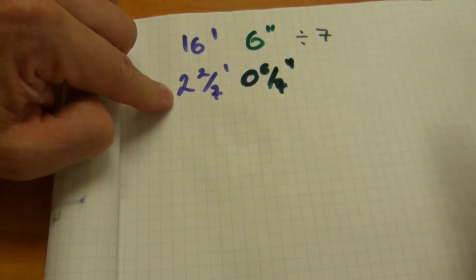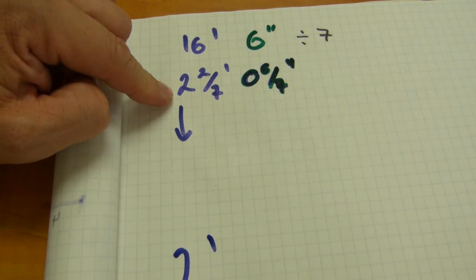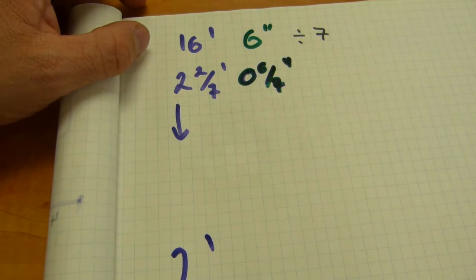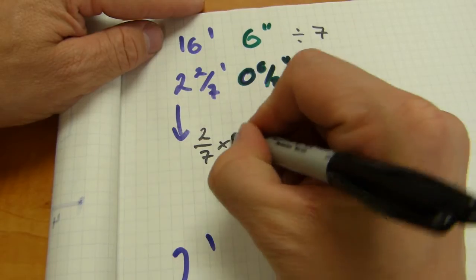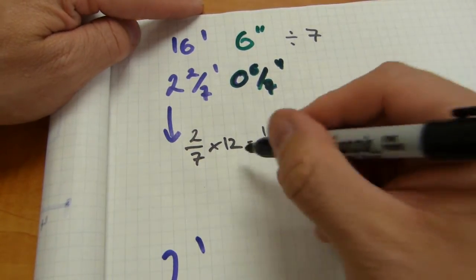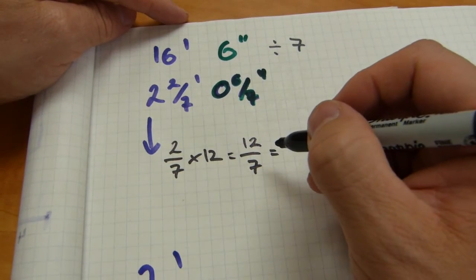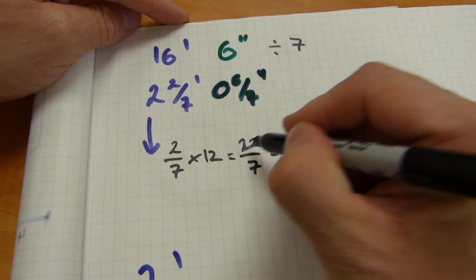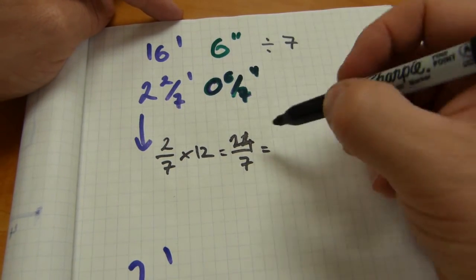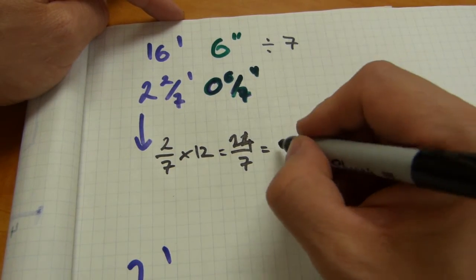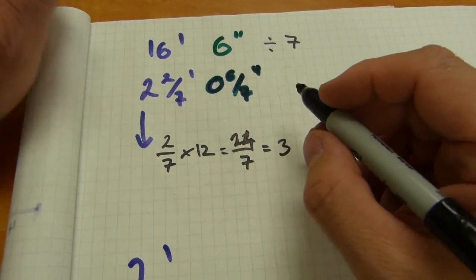That 2, this 2, the whole number part, carries down into the final answer, 2 feet. But we need to do something with the 2 sevenths of a foot. 2 sevenths needs to be multiplied by 12. That's, again, whole number by a fraction. The numerator gets multiplied, so that's 24 sevenths. The 7 goes into 24 three times.